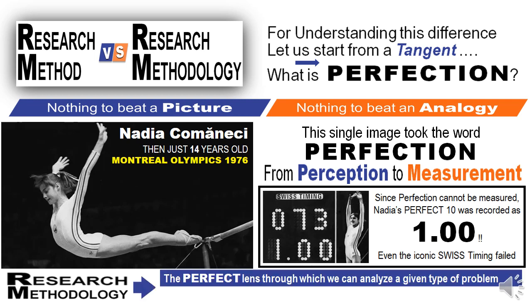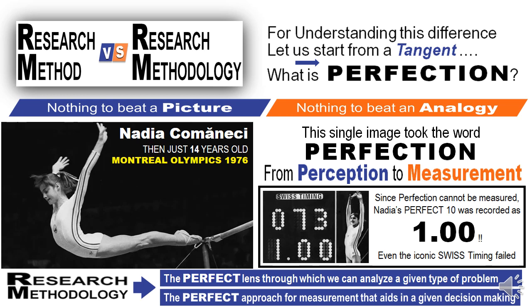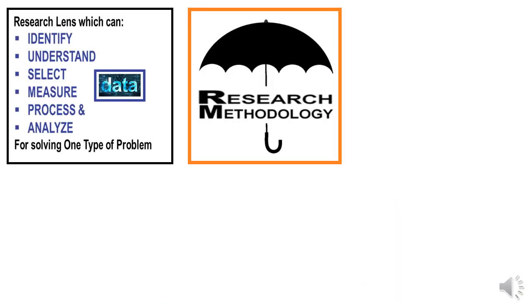Research methodology is that perfect lens through which we can analyze a given type of problem. It is that perfect approach for measurement that aids in that given type of decision making. Research methodology is that lens which can identify, understand, select, measure, process, and analyze data for solving one type of problem.